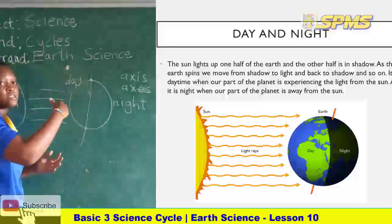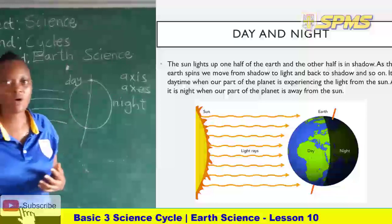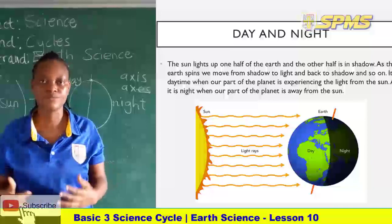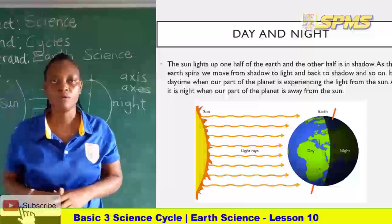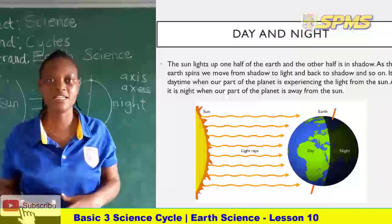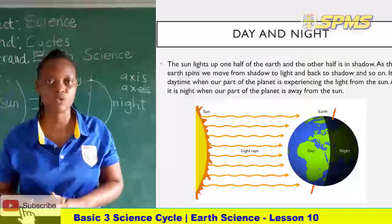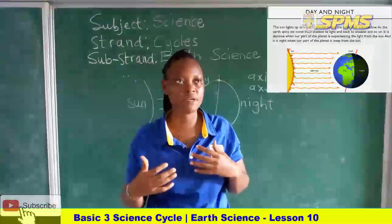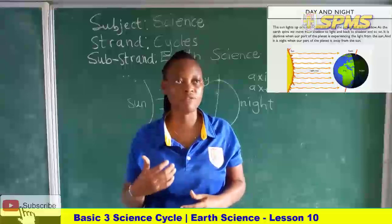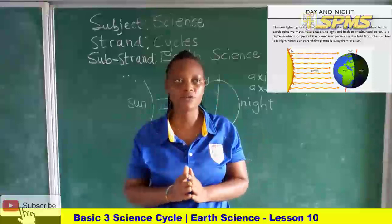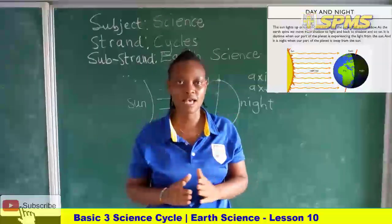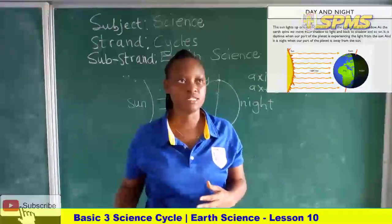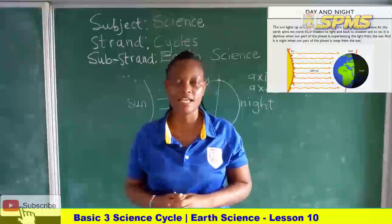As the earth spins and goes round, those that were having night now come back to face the sun and experience day, and those that were facing the sun go round and experience night. We are split into two sections — day and night. We can see on screen the light rays coming from the sun brightening up half of the earth; those on that side experience day, and the other side is dark — that is the night.